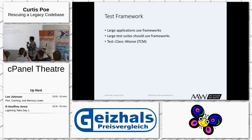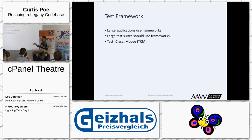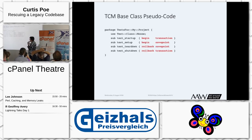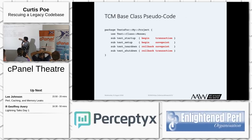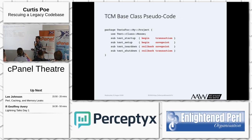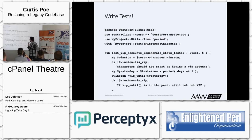So, test framework. Large applications — you're not going to build a huge website without using something like Catalyst, Mojolicious, or Dancer. Your test suite should be the same — use a framework. I recommend Test::Class::Moose because I just know it really well at this point. Here's what my base class might look like: package Test::For::MyProject, use Test::Class::Moose. In test_startup — this runs before every test class — we start a transaction. In test_setup, we start a savepoint. In test_teardown, we roll back the savepoint. In test_shutdown, we roll back the transaction. A developer never has to clean up their database, and they don't have to worry about something else stepping on their work because it all runs in a transaction.